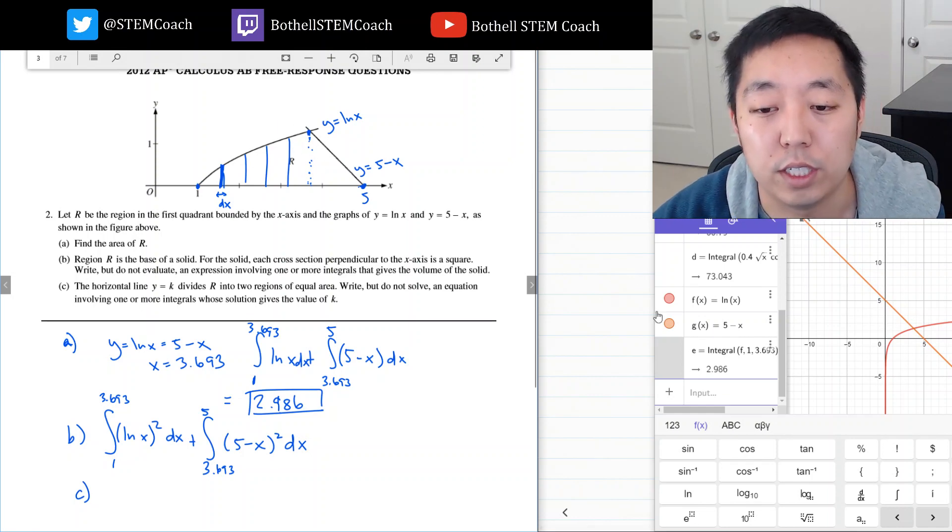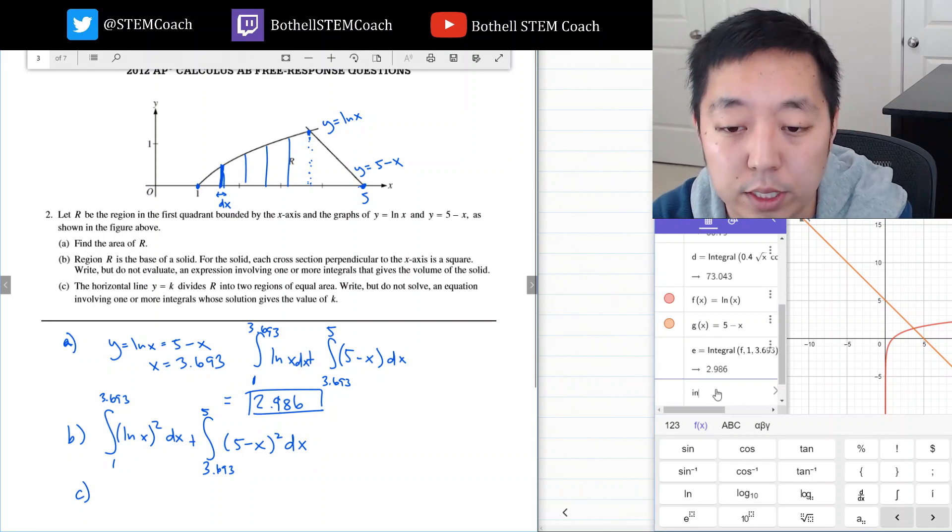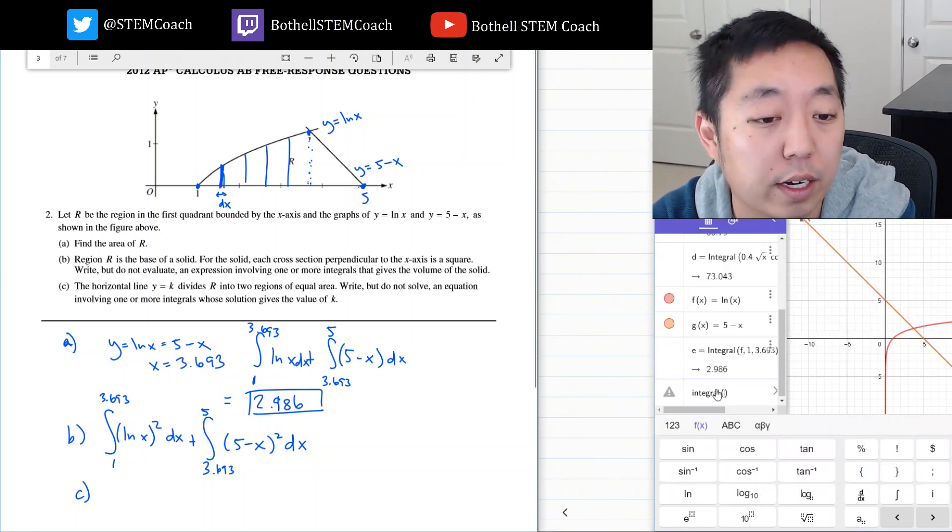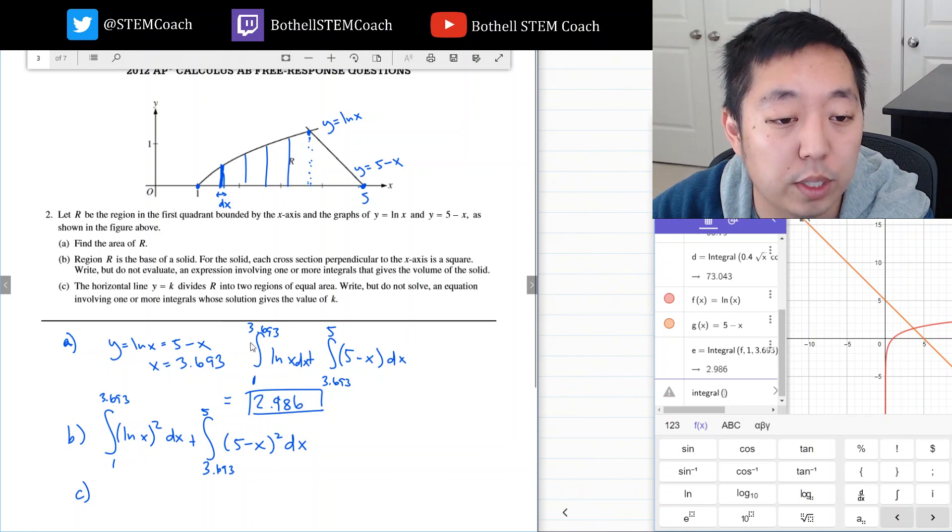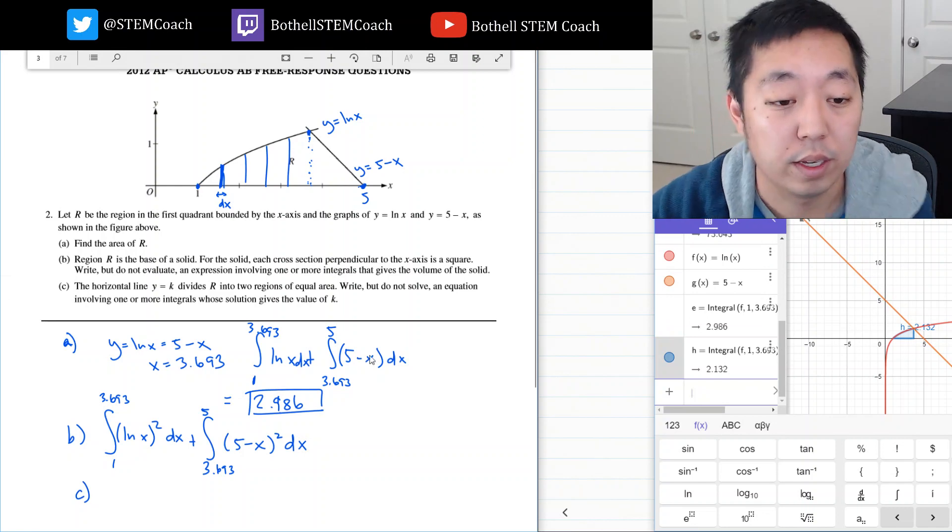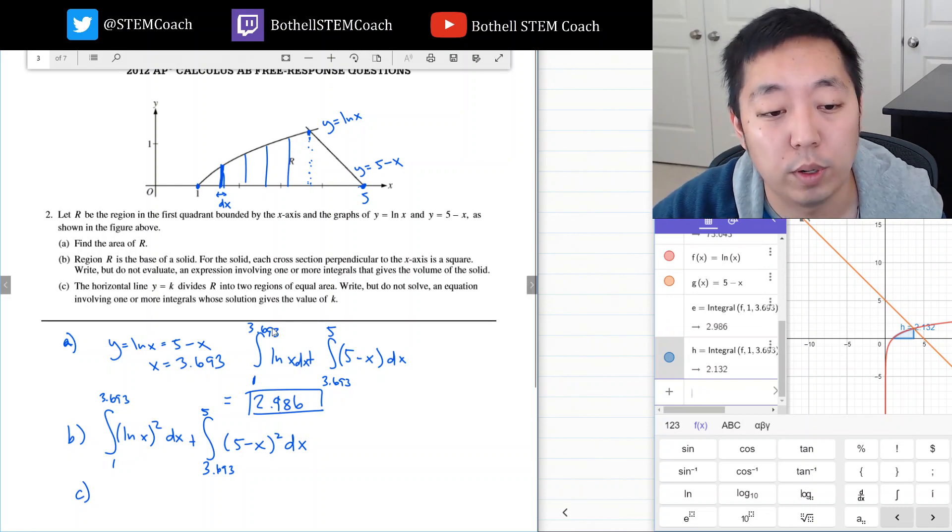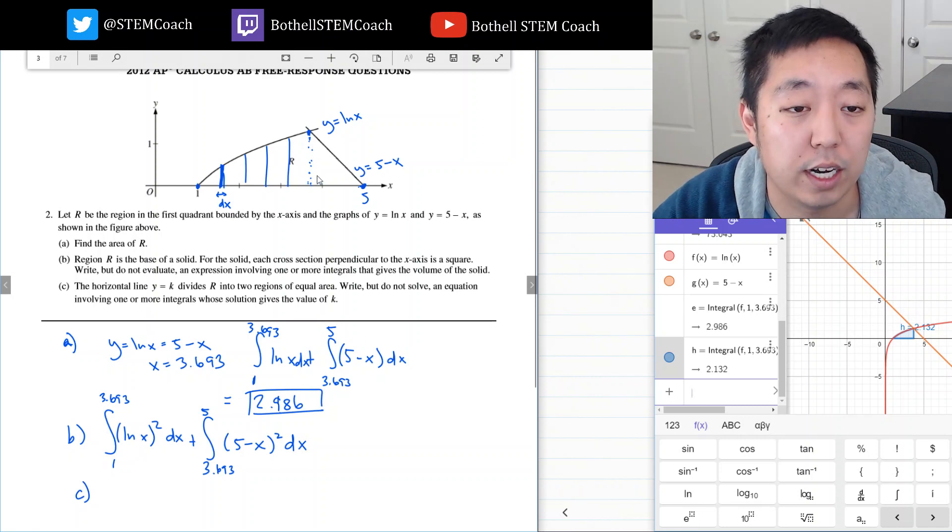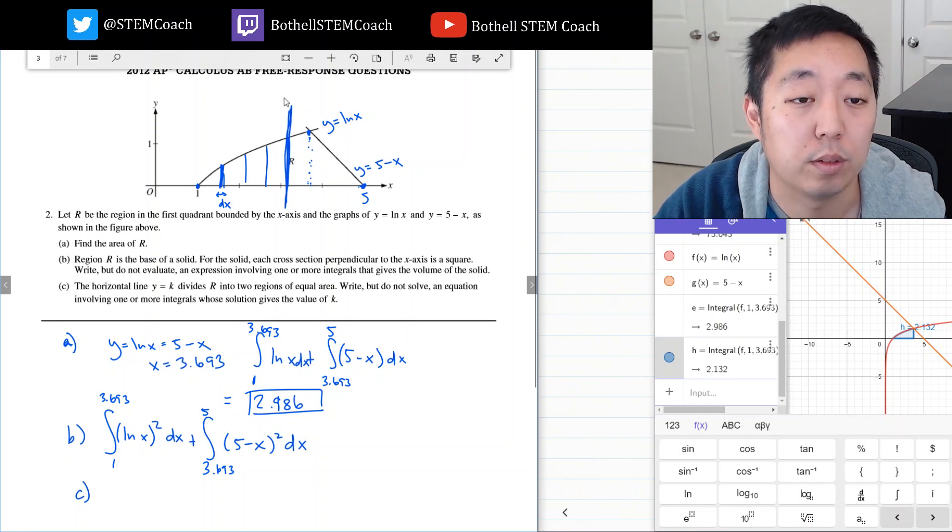The way I'm going to check it is I'm going to split this 2.896 into these two regions, just to see which one is bigger. So f goes from 1 to 3.693. This area here is 2.1, which means the remaining 0.8 comes from here. So the line that divides it has to be here. That's important when we set up the integral. This is k right here.